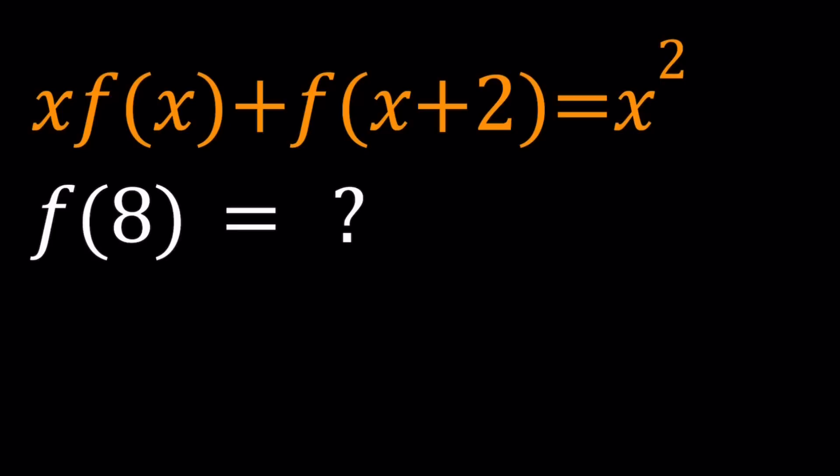So we have x times f of x plus f of x plus 2 equals x squared, and we're supposed to evaluate f of 8. Now, what type of function is this? Is it from reals to reals? I believe so. We're going to find out, but I'll try to present two methods. I don't know if one of my methods is going to work. I'm just going to test it out. Ready to explore? Let's get started.